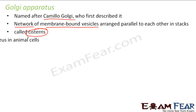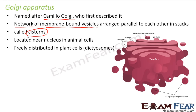Looking at the figure, you can see how a Golgi apparatus looks. The lines arranged parallelly represent a network of membrane-bound vesicles. These small vessel-like structures are transport vesicles, all connected to each other, arranged in parallel stacks known as cisterns.